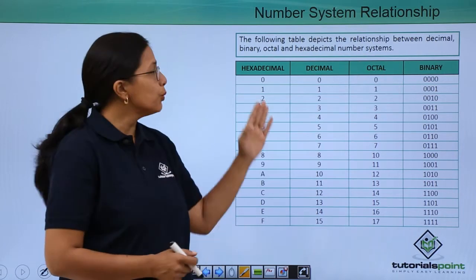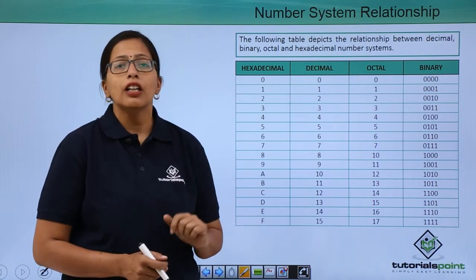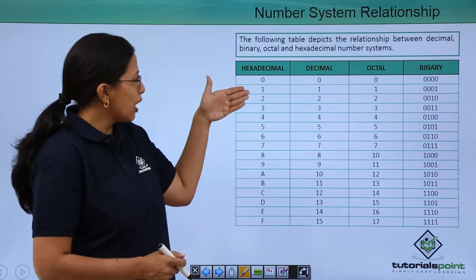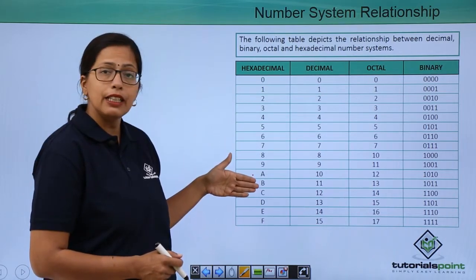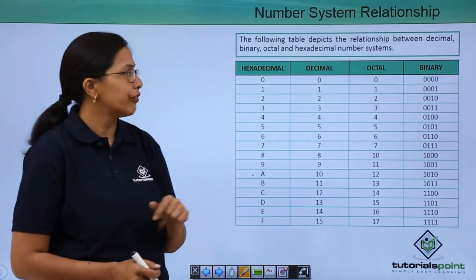Now I will just remind you that hexadecimal has got 16 digits: 0, 1, 2, 3, 4 till 9 and then A, B, C, D, E and F.